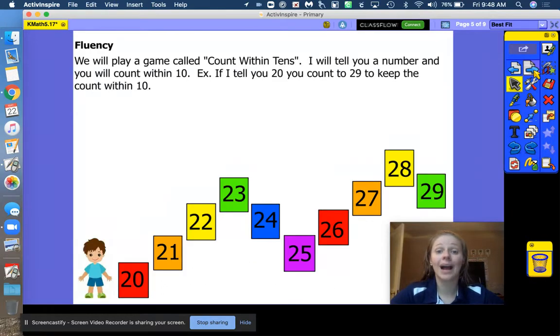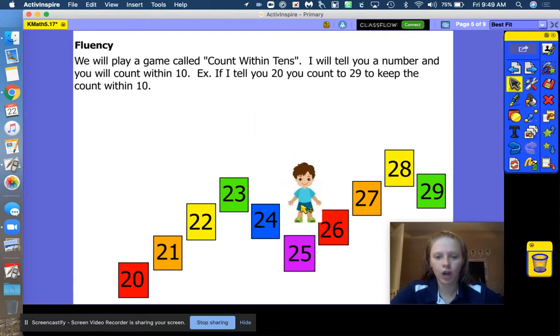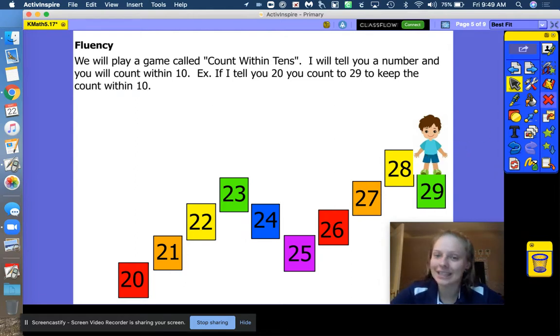We will play a game called count within 10s. I will tell you a number and you will count within 10. Let's take a look at our number path and help the kid get to the other side. Let's do a big, giant troll voice to help him cross the bridge and escape the troll. Just like 3 Billy Goats Gruff. Are you ready? 20, 21, 22, 23, 24, 25, 26, 27, 28, 29. Stop. Good job. Well done. You helped him cross over and beat that stinky troll. Good job.